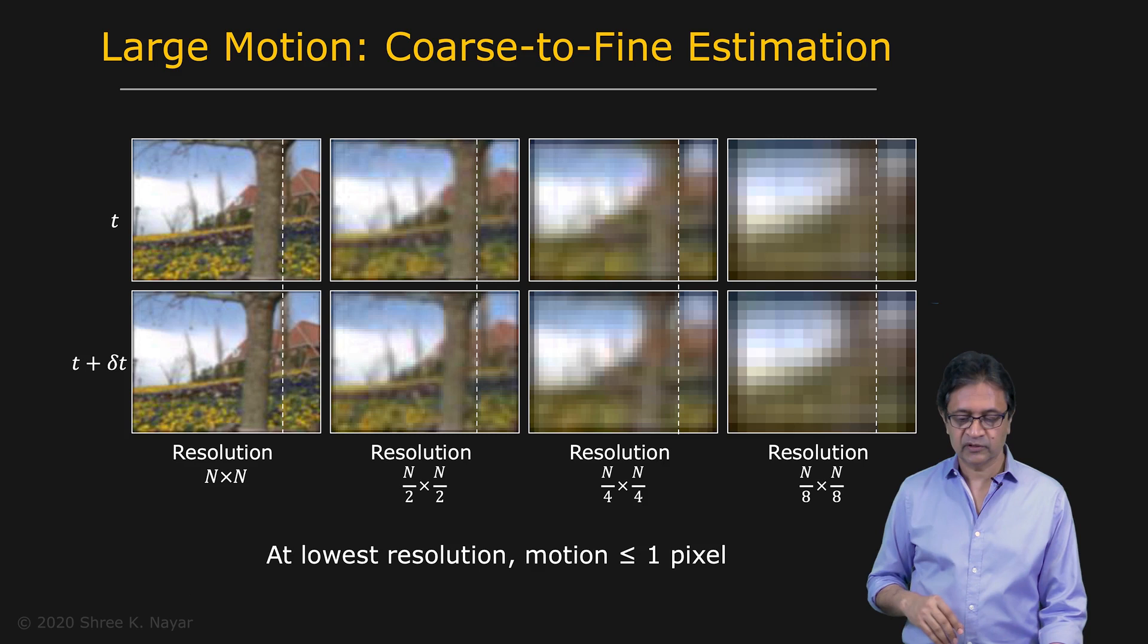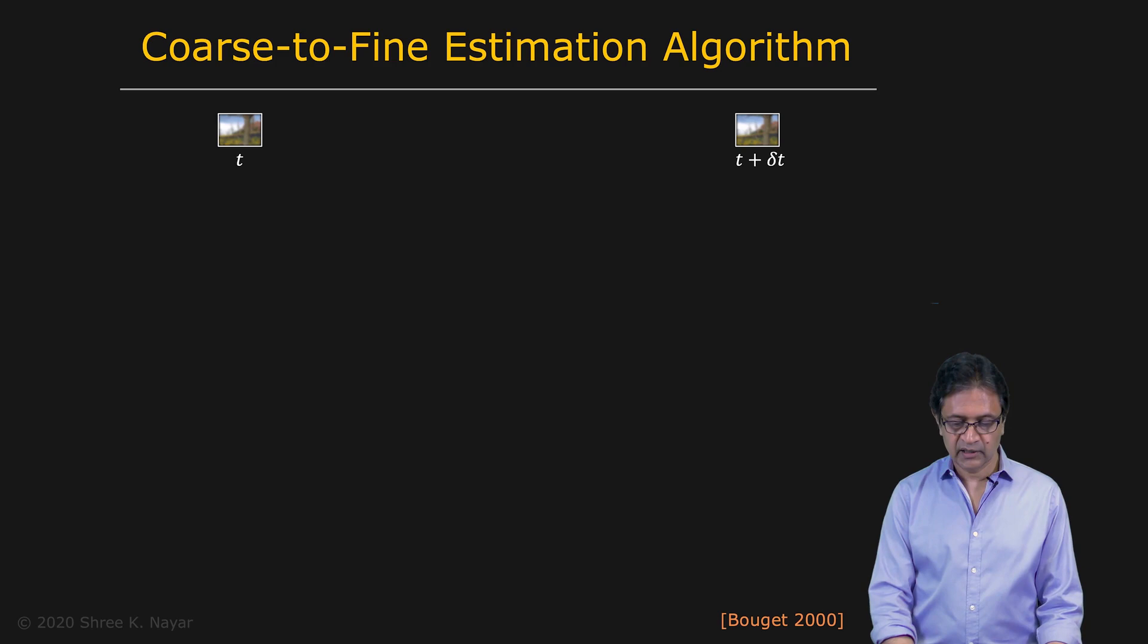So here's the algorithm for going from coarse to fine estimation of optical flow. So you start with your lowest resolution, these tiny little images that you see right here. And we apply our optical flow algorithm, perhaps the Lucas Kanade algorithm, and we get optical flow.